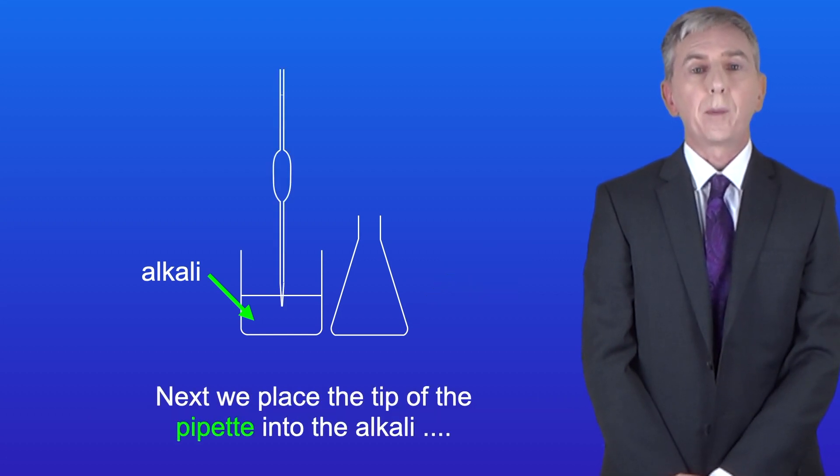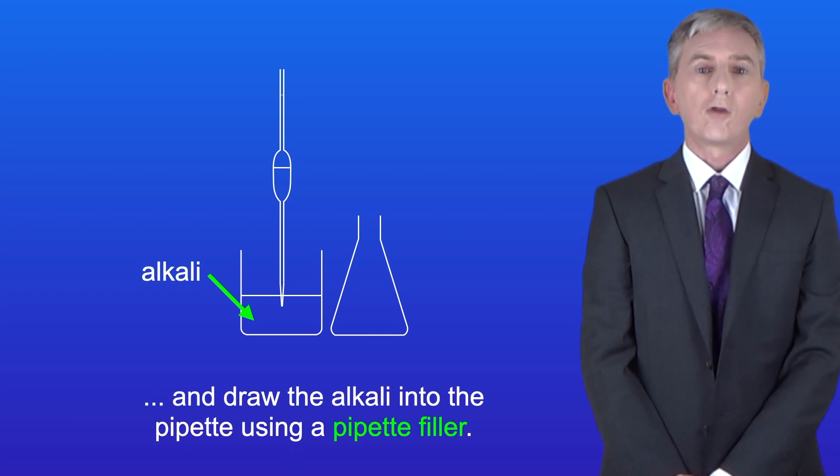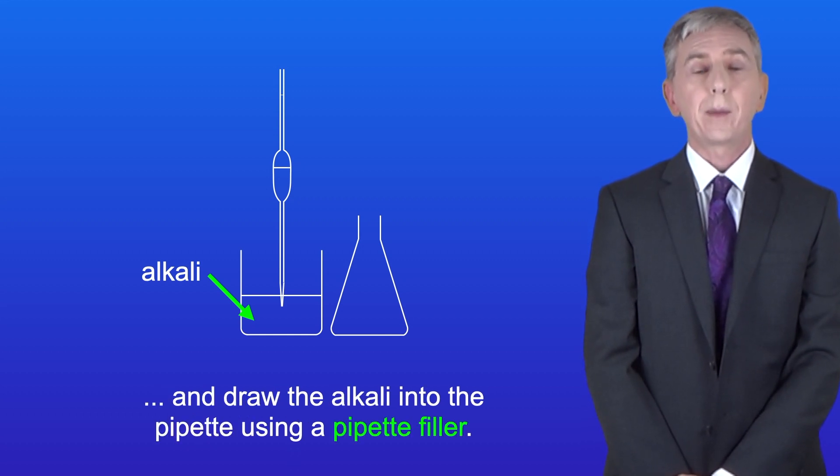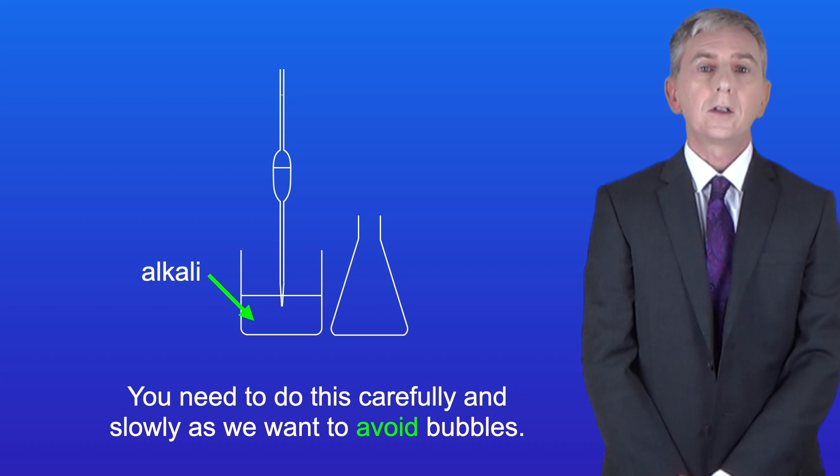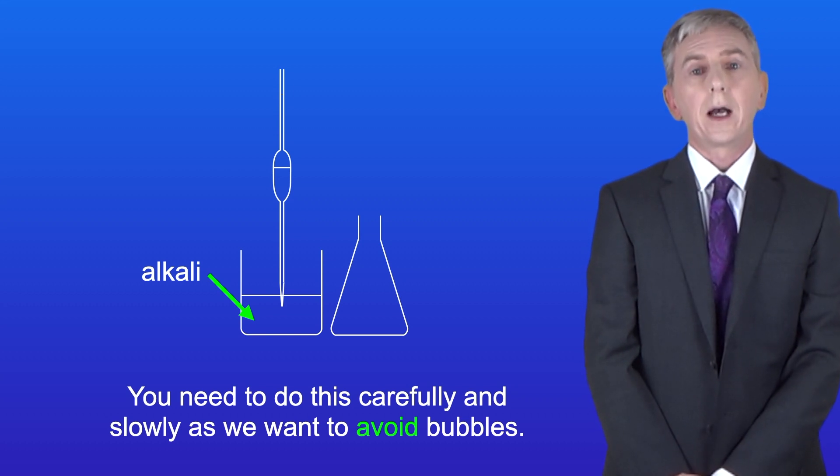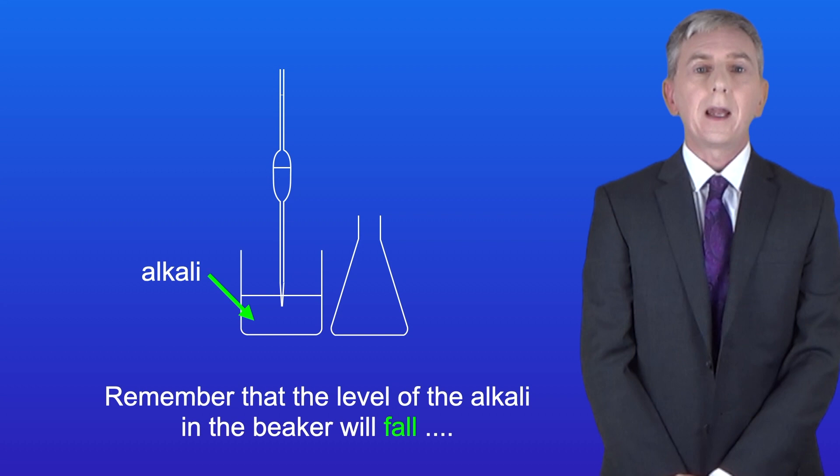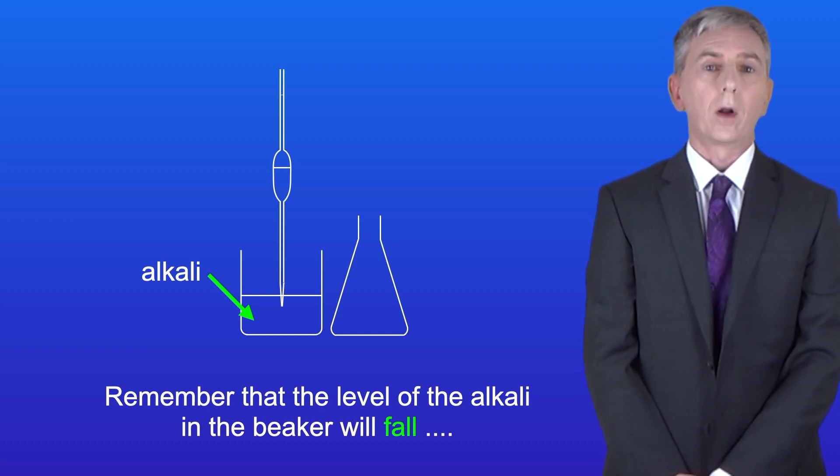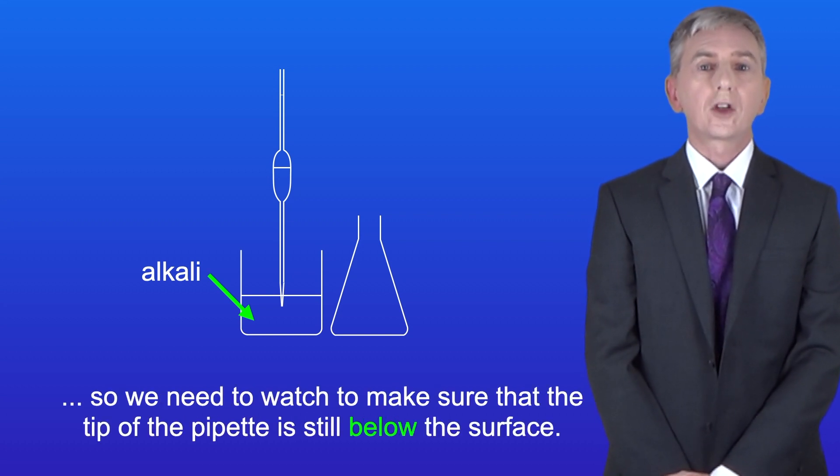Next we place the tip of the pipette into the alkali and draw the alkali into the pipette using a pipette filler. Now we need to do this carefully and slowly as we want to avoid bubbles. Remember that the level of the alkali in the beaker will fall so we need to watch to make sure that the tip of the pipette is still below the surface.